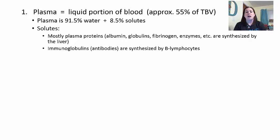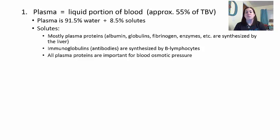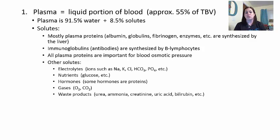We also see immunoglobulins, which are antibodies that help fight off infections, synthesized by B lymphocytes. All plasma proteins are important for blood osmotic pressure, influencing whether water moves toward or away from cells depending on the concentration of proteins. Other solutes include electrolytes like sodium, potassium, chlorine, bicarbonates, and phosphates; nutrients like glucose; hormones; gases like oxygen and carbon dioxide; and waste products like urea, ammonia, creatine, uric acid, and bilirubin.